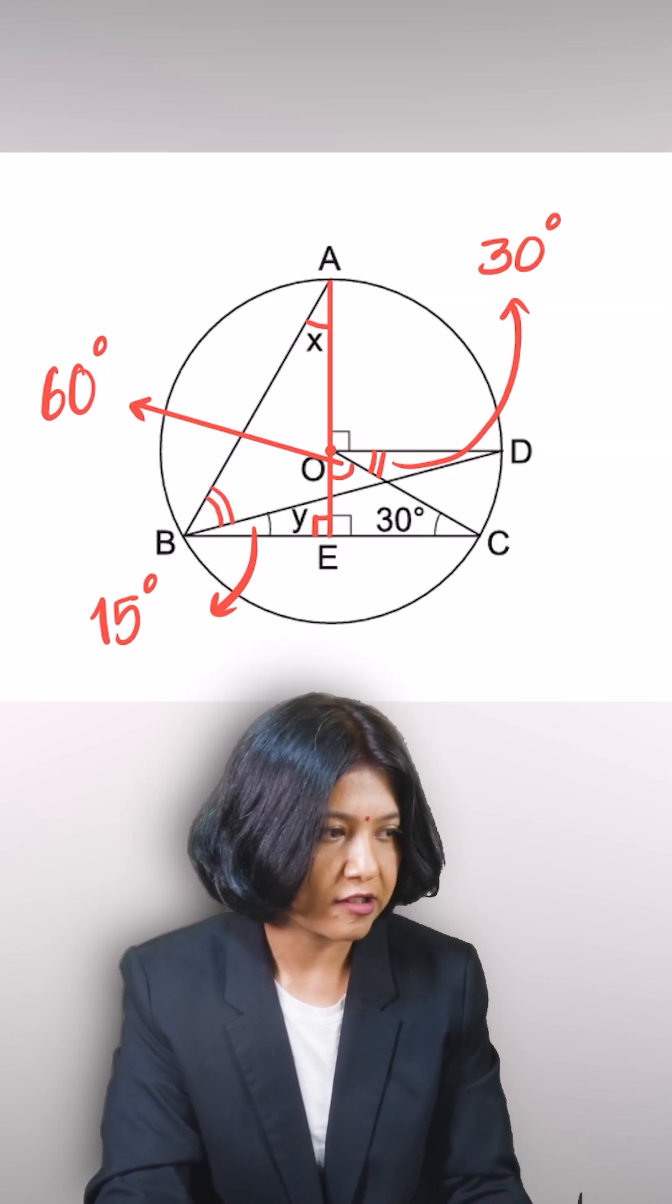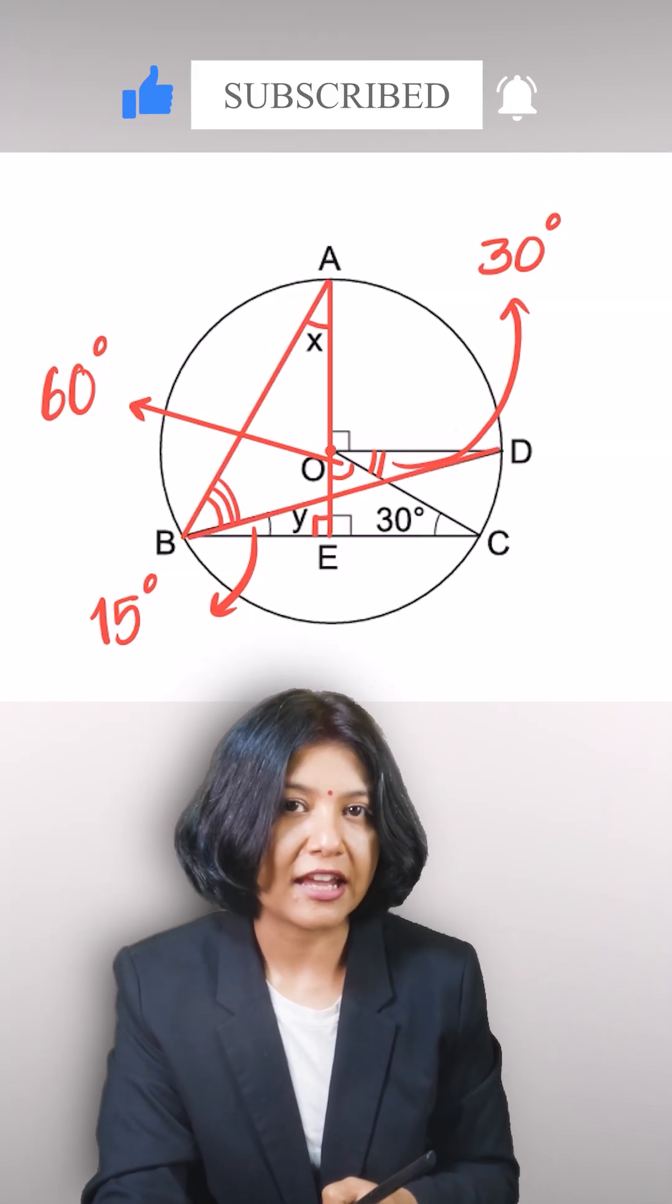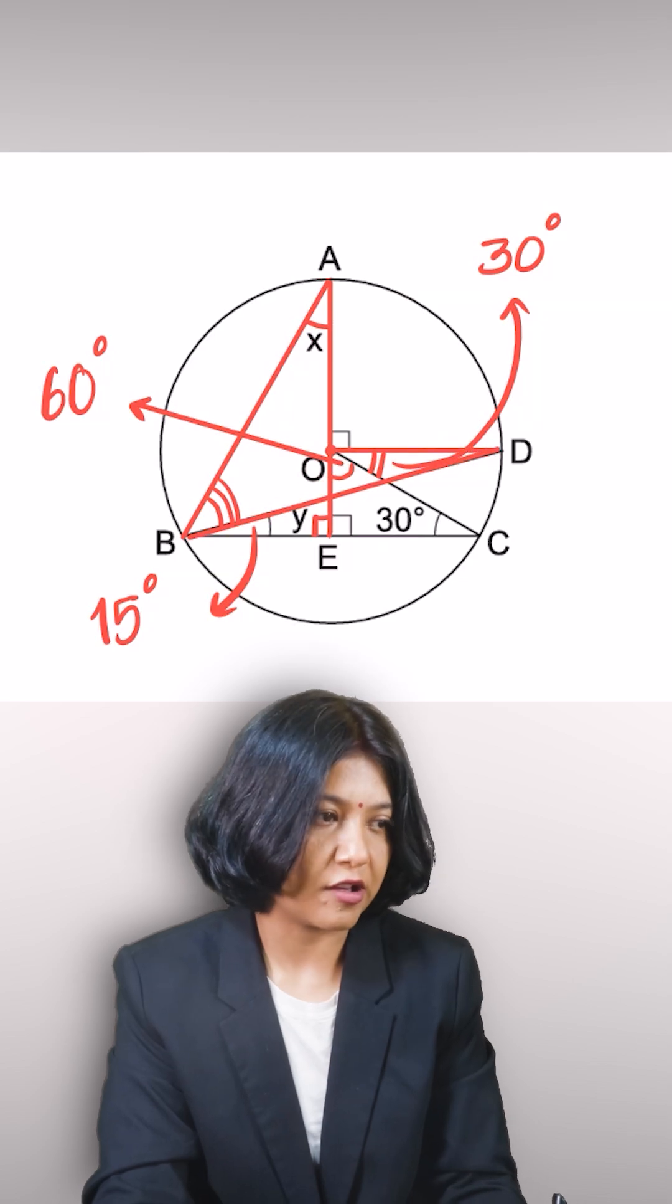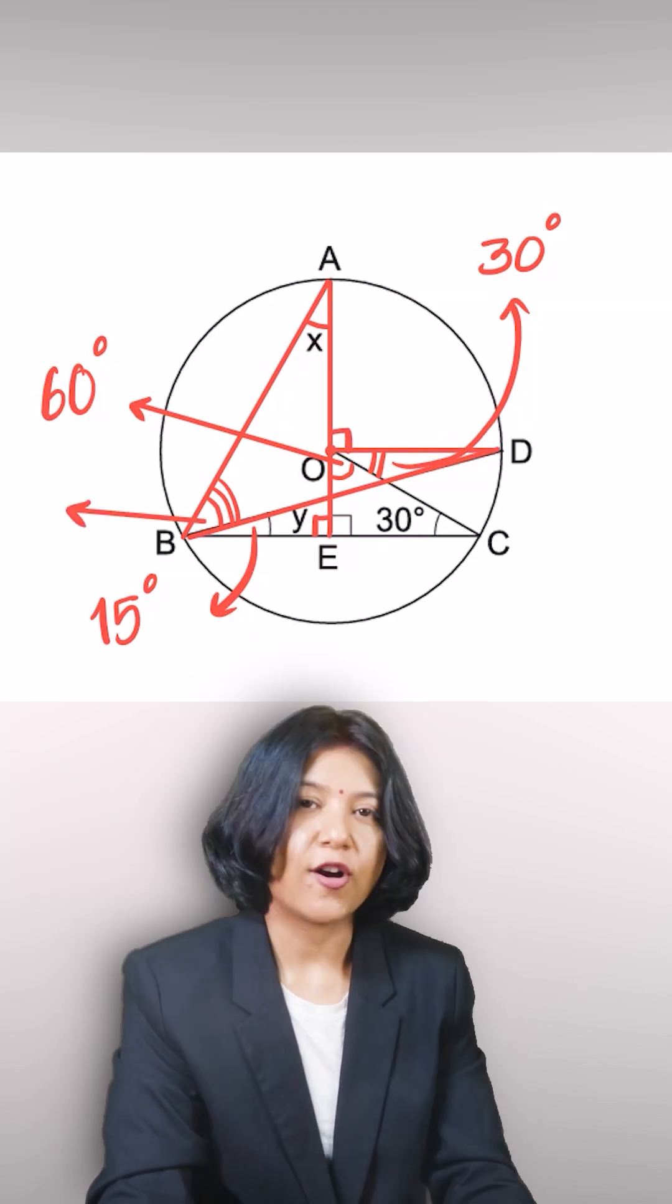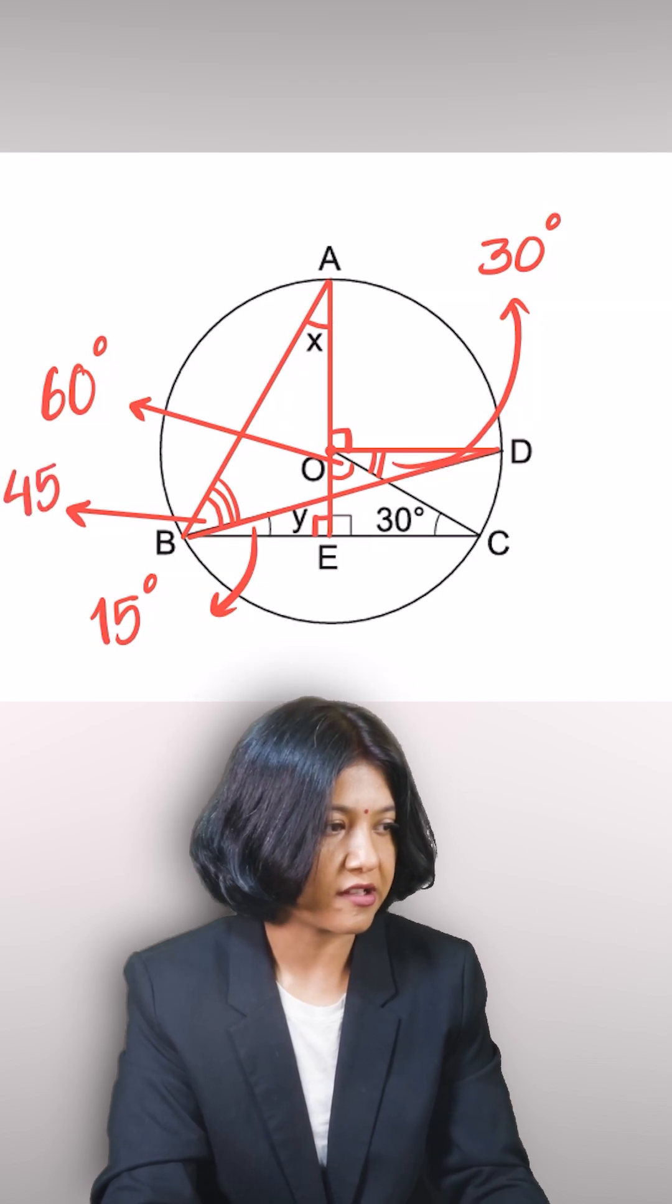Now, if you look at this angle, this angle is subtended by the arc AD. The same arc AD is subtending the angle at the center, which is 90. So if at the center it's 90, then on the circle it has to be always half of that, which gives me 45 degrees.